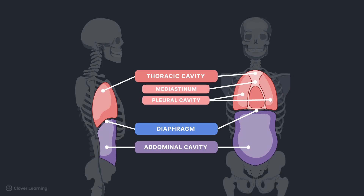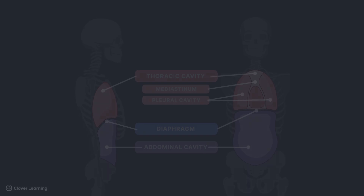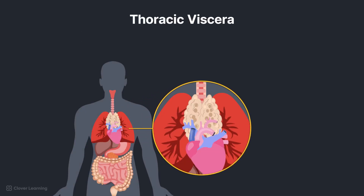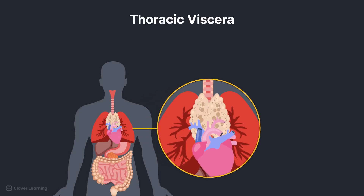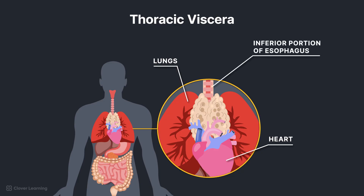Now let's apply these terms and use them to identify the corresponding anatomy of the thoracic viscera. The thoracic cavity contains the heart and lungs, organs of the respiratory, cardiovascular, and lymphatic systems, the inferior portion of the esophagus, and the thymus gland.